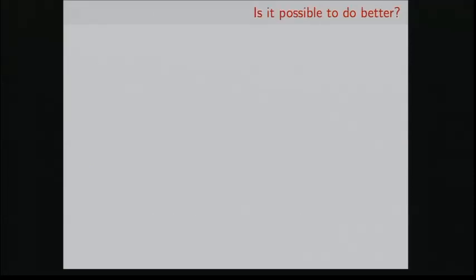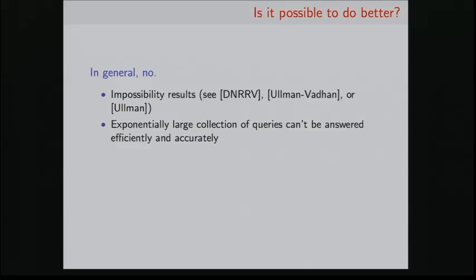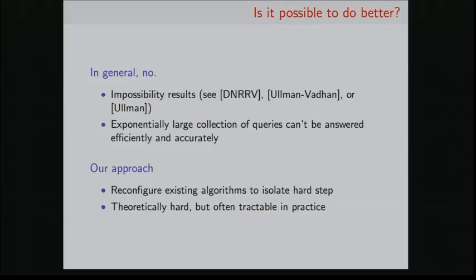So the question is, is it possible to do better, adapting these algorithms to get around this bottleneck? Unfortunately, in general, the answer is no. There's a collection of very nice impossibility results showing that this exponentially large collection of queries we cannot hope to answer accurately and efficiently in general. So that's kind of disappointing. Our work can be seen as reconfiguring some of these existing algorithms in order to isolate this hard step. And this hard step, we want to pull it out of the algorithm so that we can apply existing constraint-solving technology on this problem. This hard step is really theoretically hard, but there's been lots of solvers that have been developed to solve these problems pretty well in practice. So we can see how well we might hope to perform.